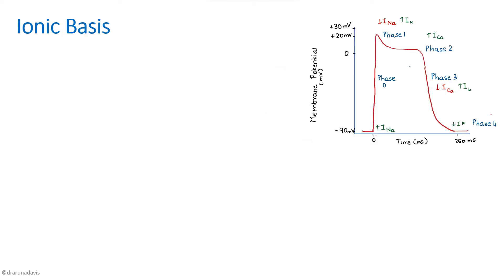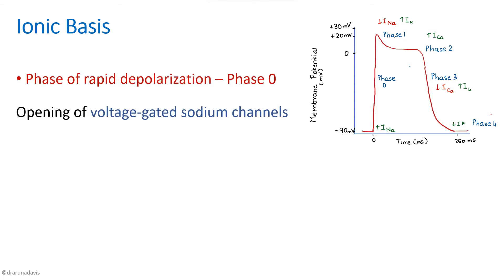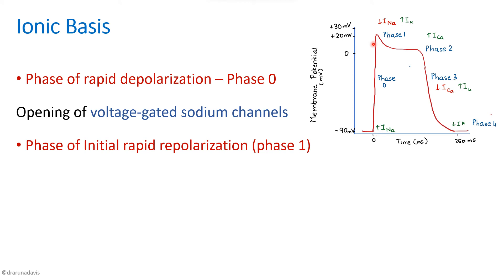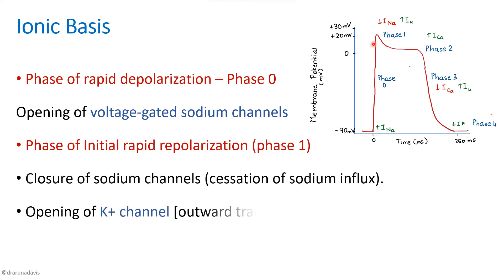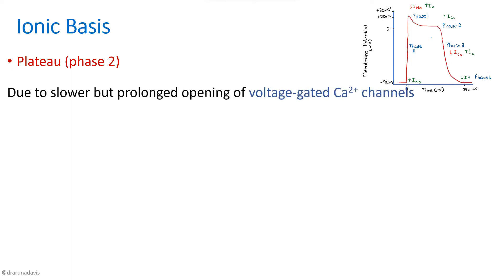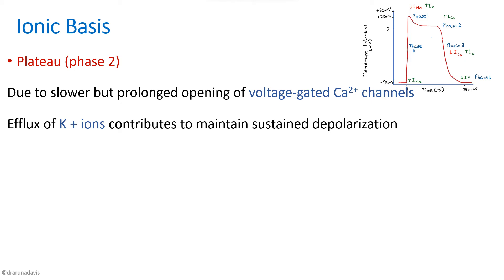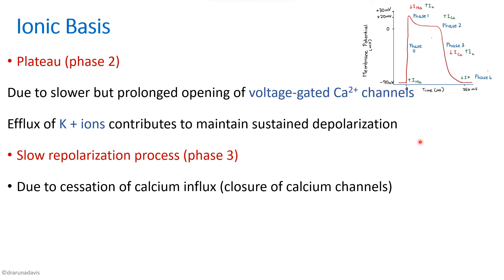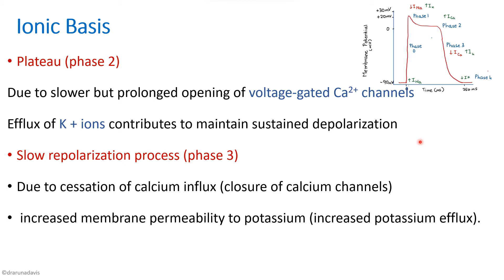Summarizing the ionic bases: Phase 0 is due to opening of voltage-gated sodium channels. Phase 1 is due to closure of sodium channels and opening of potassium channels. Phase 2 (plateau) is due to prolonged opening of voltage-gated calcium channels, with efflux of potassium balanced by influx of calcium. Phase 3 is due to cessation of calcium influx and increased potassium permeability. Phase 4 is the resting membrane potential.